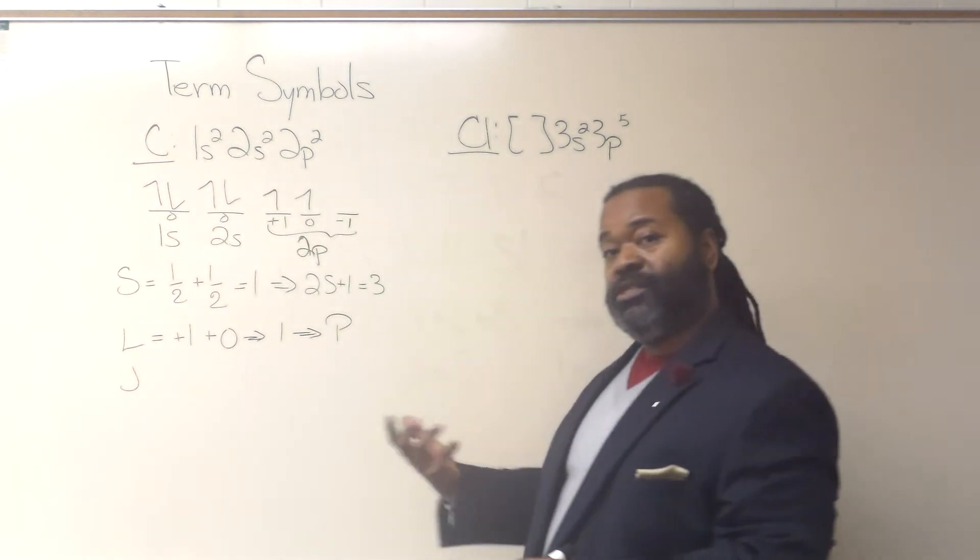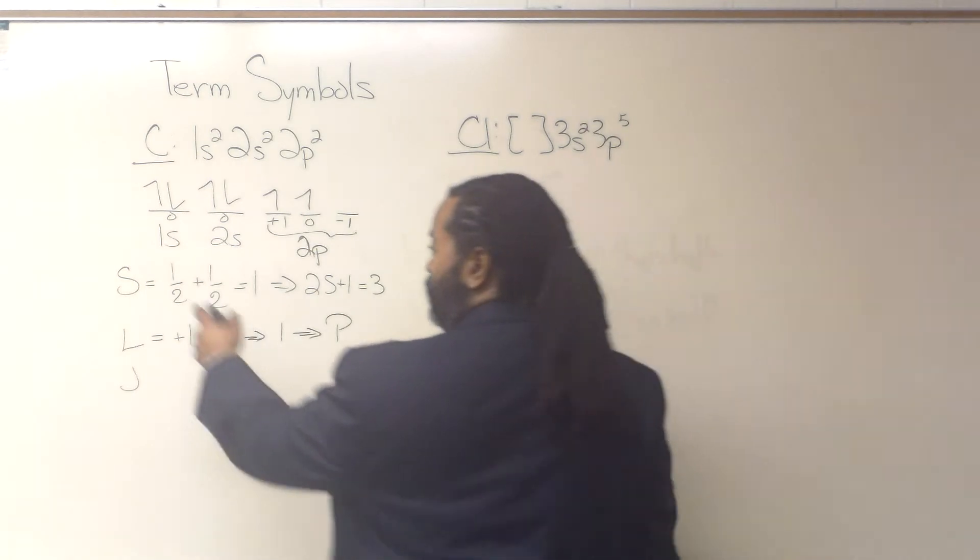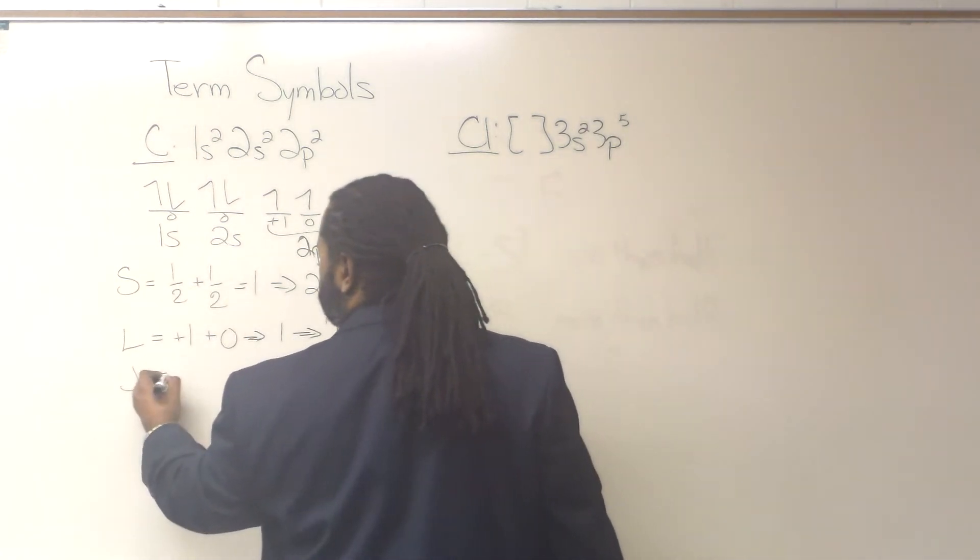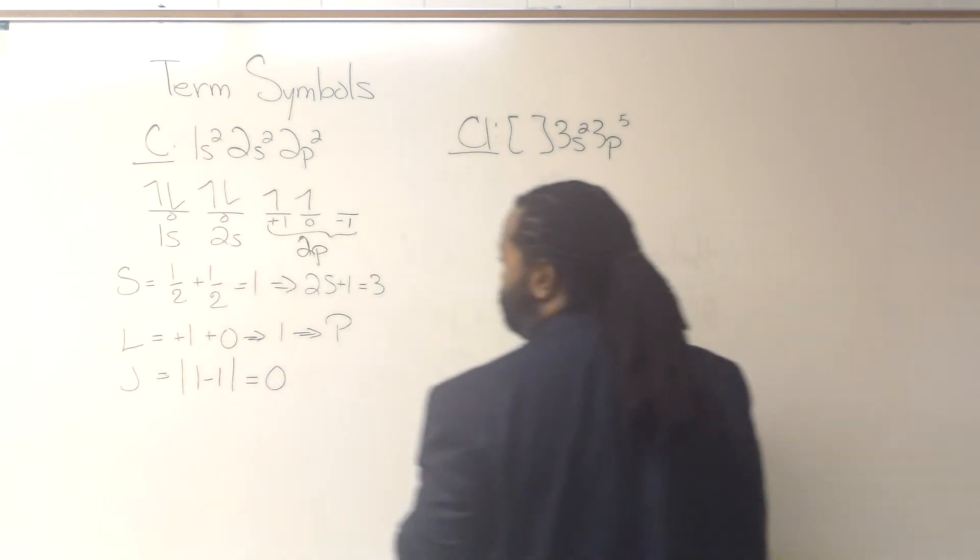And for j, the rule we want to use says that because this is less than half full, we're going to take the difference between these two and get the absolute value. Well, that's just equal to 0.